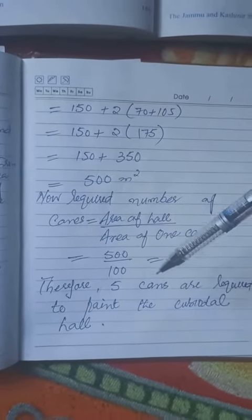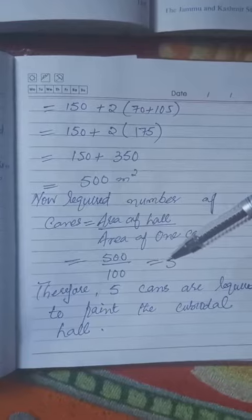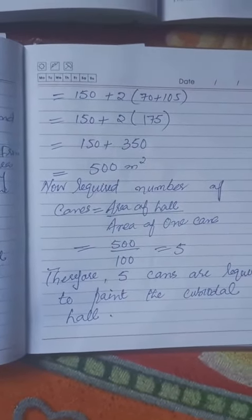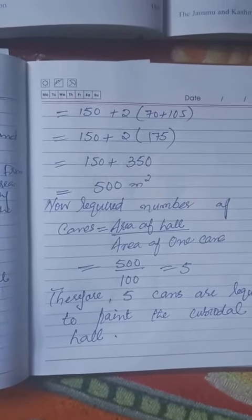Therefore, 5 cans are required to paint the cuboidal hall. This completes question number 5.